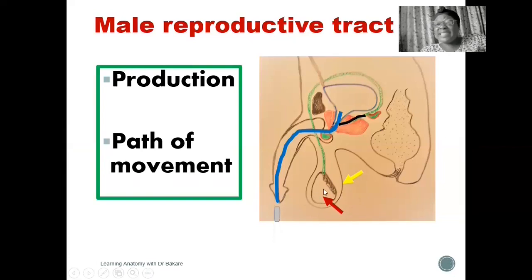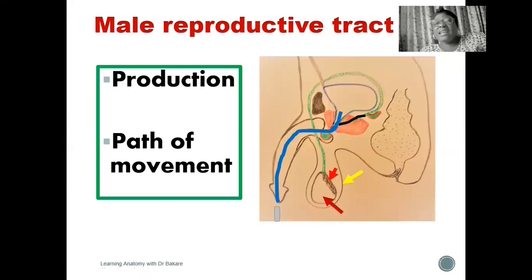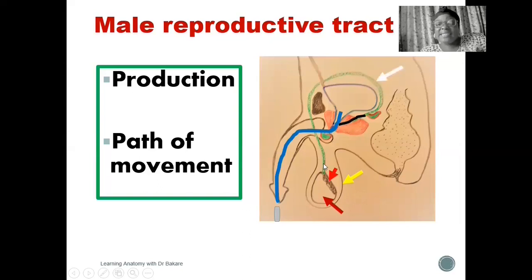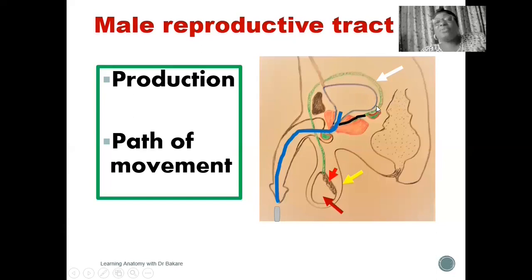After production within the testes, sperm is pushed into the epididymis, highlighted in black and arrowed in red. This is the region where the sperm is released into — it is a storage site and a site where maturation also occurs. After the epididymis, it is further directed into the vas deferens, highlighted in green and arrowed in white. The testis is located outside the body, and it is through the vas deferens that the sperm is directed into the body before being directed outside through the penis.